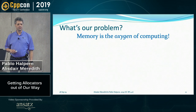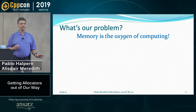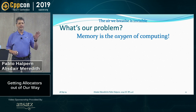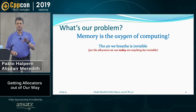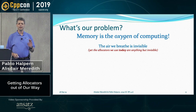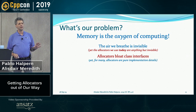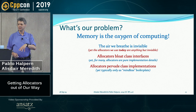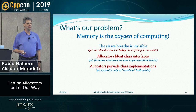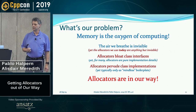So what's the problem we're trying to solve? Memory is like the oxygen of computing. But unlike the air that we breathe, which is invisible, the allocators that we use to get control of our memory are anything but invisible. They're all over our interfaces and in our implementations, giving us an opportunity to get things wrong. So at this stage, allocators are still in our way.